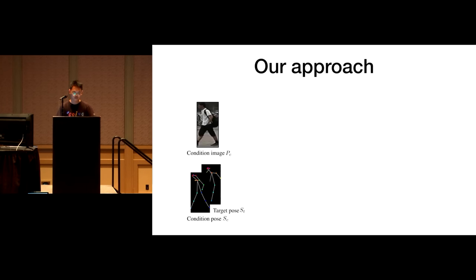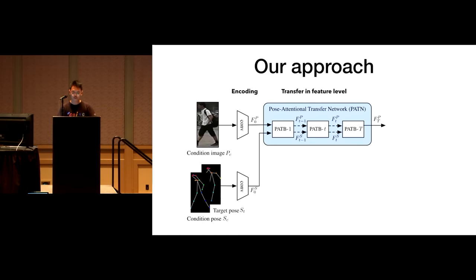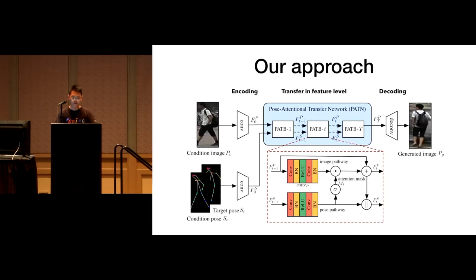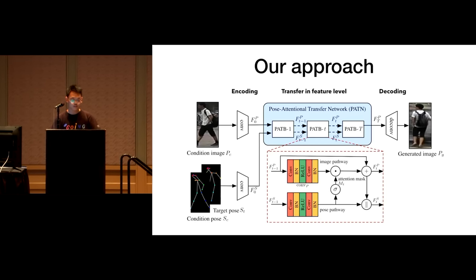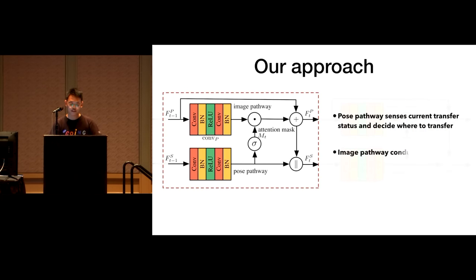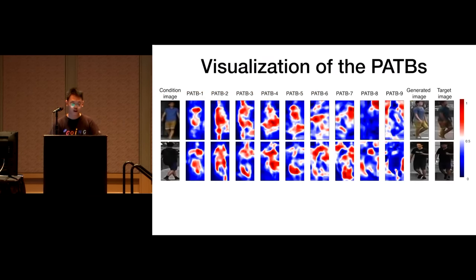Our method is quite intuitive: if it's hard to do it at once, we do it step-by-step and progressively achieve our goal. We first use convolutions to encode the condition image and poses to corresponding appearance code and pose code. Then we use the core Pose-Attentional Transfer Network (PATN) to progressively transfer the appearance features to places indicated by the pose in the feature level. The final appearance code is decoded to yield images that are challenged by discriminators.